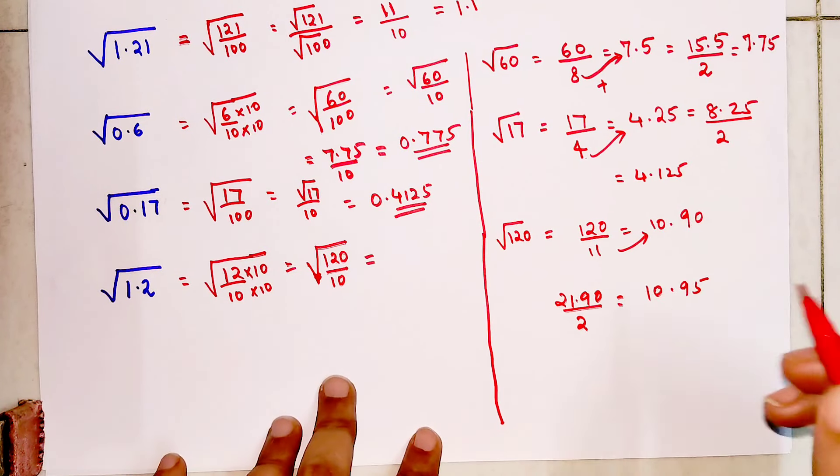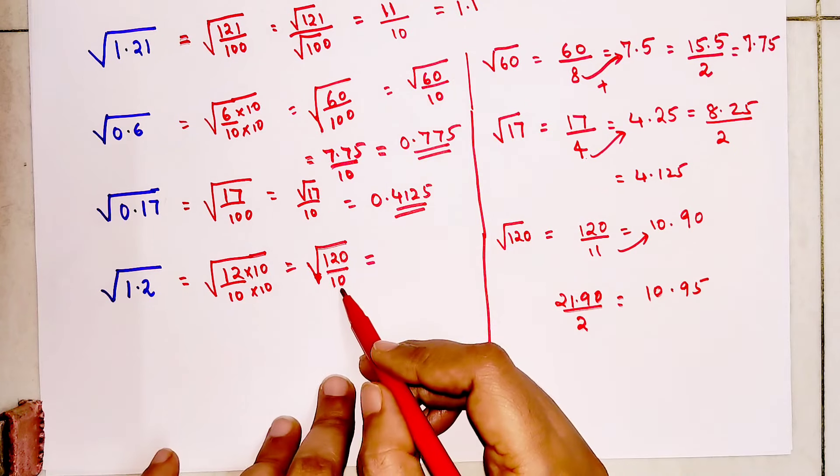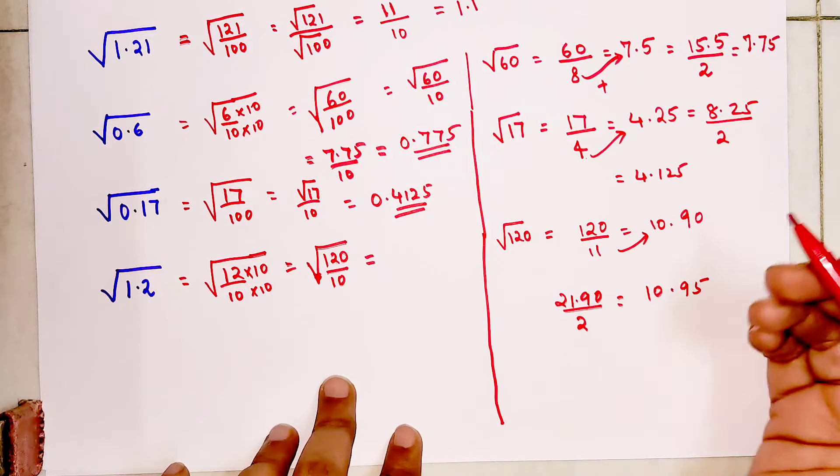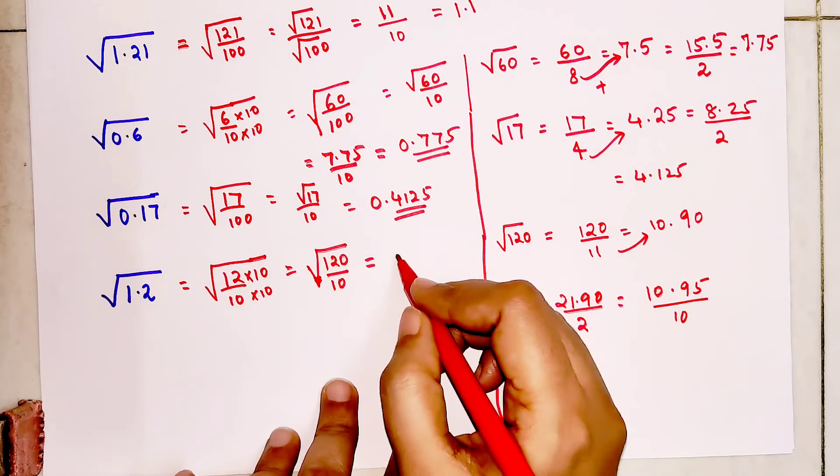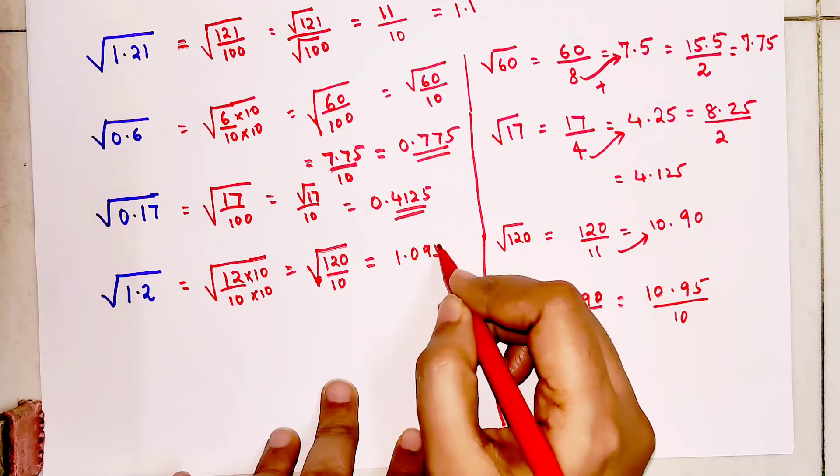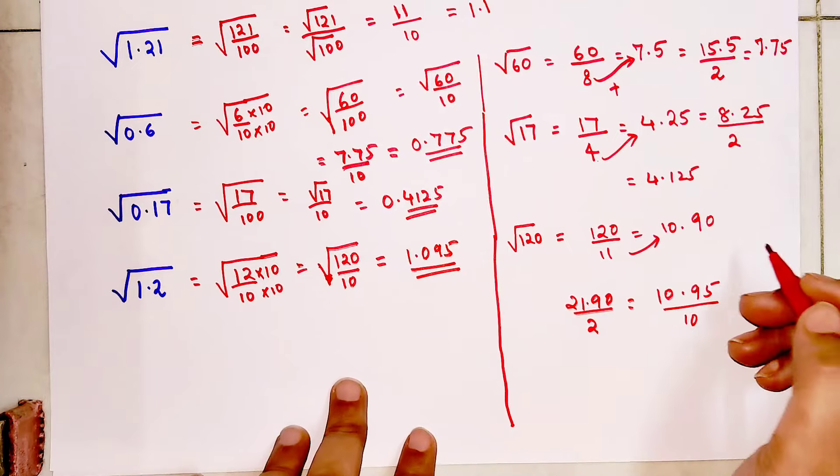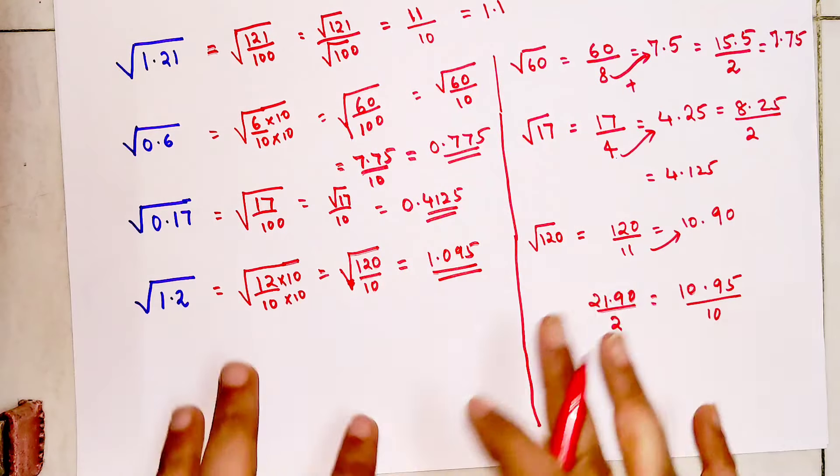So I will get 10.95. And this is still not my final answer because I will divide this by 10 again. So when I divide this by 10, my final answer is 1.095.